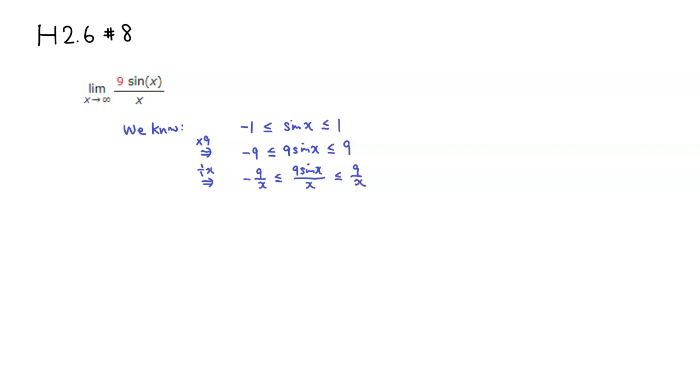So this is a great setup for squeeze theorem. We can just look at the limit of this guy and the limit of the biggest guy, which is actually pretty easy to find. The limit of negative 9 over x as x approaches infinity is going to be negative 9 over a really big number. It's going to approach 0.